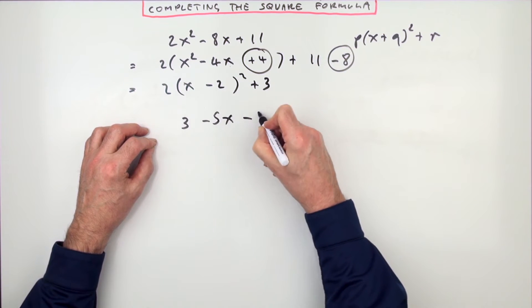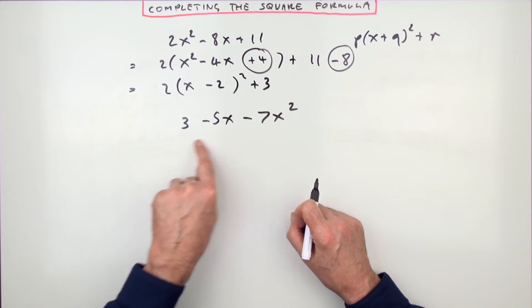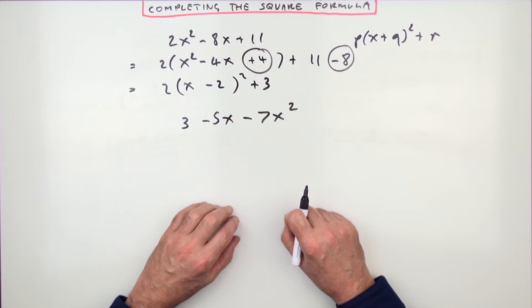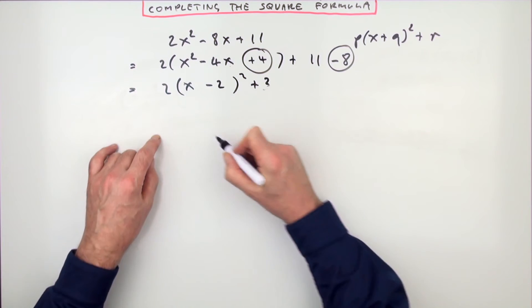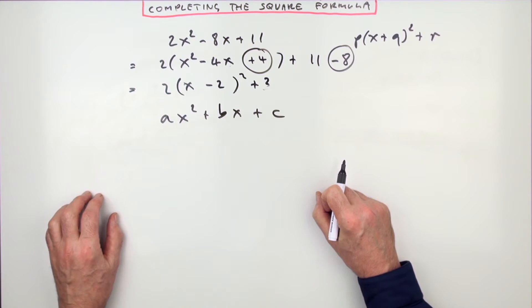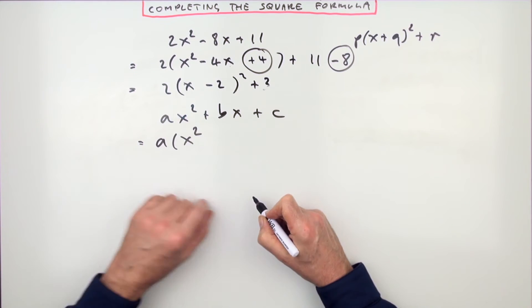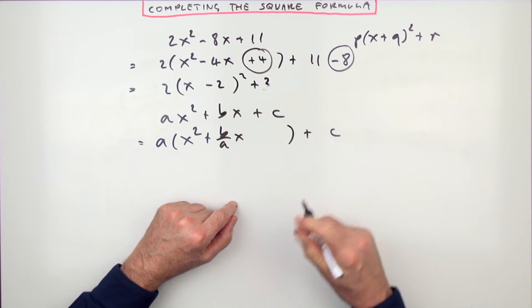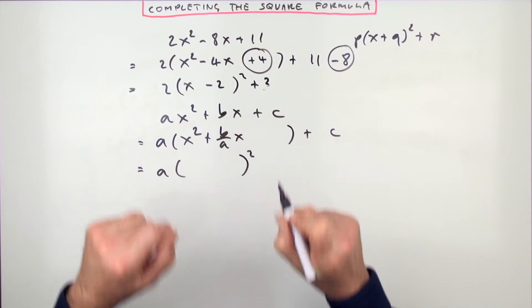But what would 3 minus 5x minus 7x squared be to do? You wouldn't be quite so happy with that. Those numbers aren't too nice to work with. It's going to get a little bit cumbersome here. Well, I'll not do that just now. You'll just think, well, what is this process you just went through? What would happen in the general case if this was your quadratic using the same steps? Well, you take out that a to make it just x squared. That means this has to be divided by it. So it's b over a. I'll just leave the c out of it. You can include it if you like.